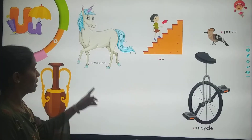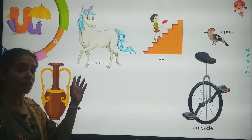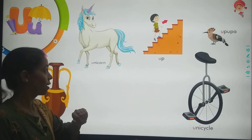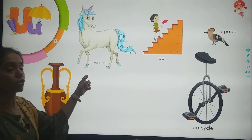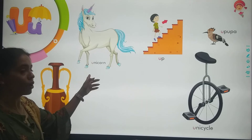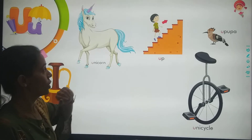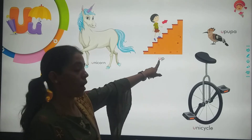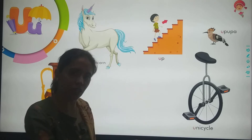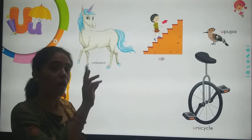The next is Unicorn. This is also a type of horse — U for Unicorn. Then U for Up. We go upward — U for Up.